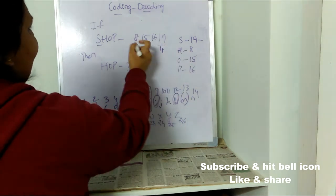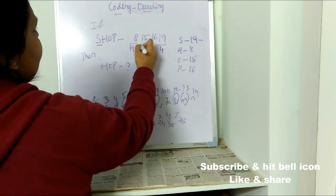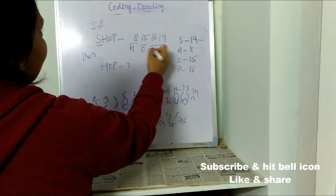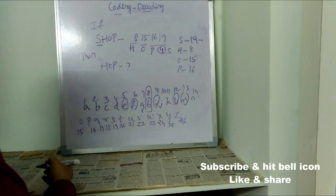H is in 1st position, O is in 2nd position, P is in 3rd position. In 4th position he has written 19, which is S.